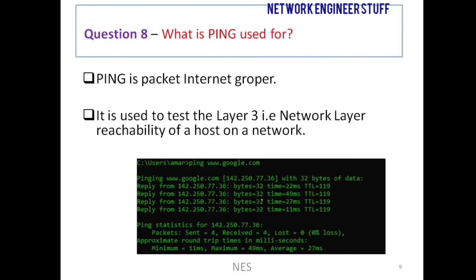Question number eight: what is ping? Ping is a tool used to test the Layer 3 reachability of a host in the network. For example, pinging google.com shows whether the packets are successful. In the output shown, four packets were sent, four were received, and zero were lost — a 0% packet loss — confirming that the network layer is reachable from the source PC to the google.com server.